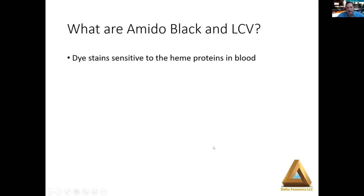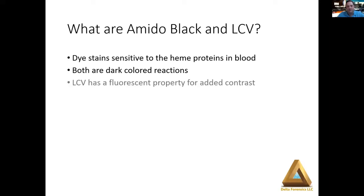When we talk about amido black and leukocrystal violet, these are dye stains sensitive to the heme proteins found in blood, and they are very sensitive. Both are dark-colored reactions, so the overall visualization after the reaction occurs is going to be dark in nature — that's your contrast factor to consider. One difference is that leukocrystal violet does have a slight fluorescent property, giving you a different avenue for visualization. Both are two-step applications — essentially a spray and rinse — where you apply the chemical and rinse with distilled water. The reaction is pretty much instantaneous, so it gives you a nice, quick visualization.